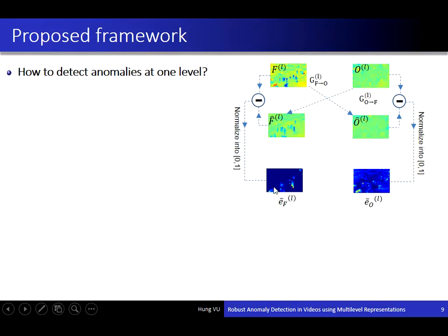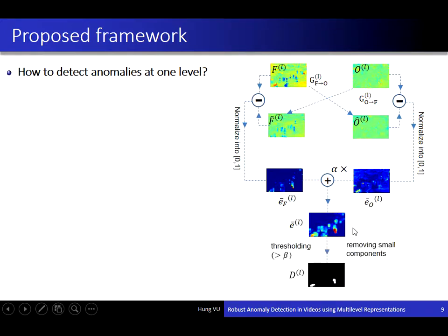Combining the two error maps together, we obtain the final error map. By thresholding this map, we obtain the binary detection map at one level.